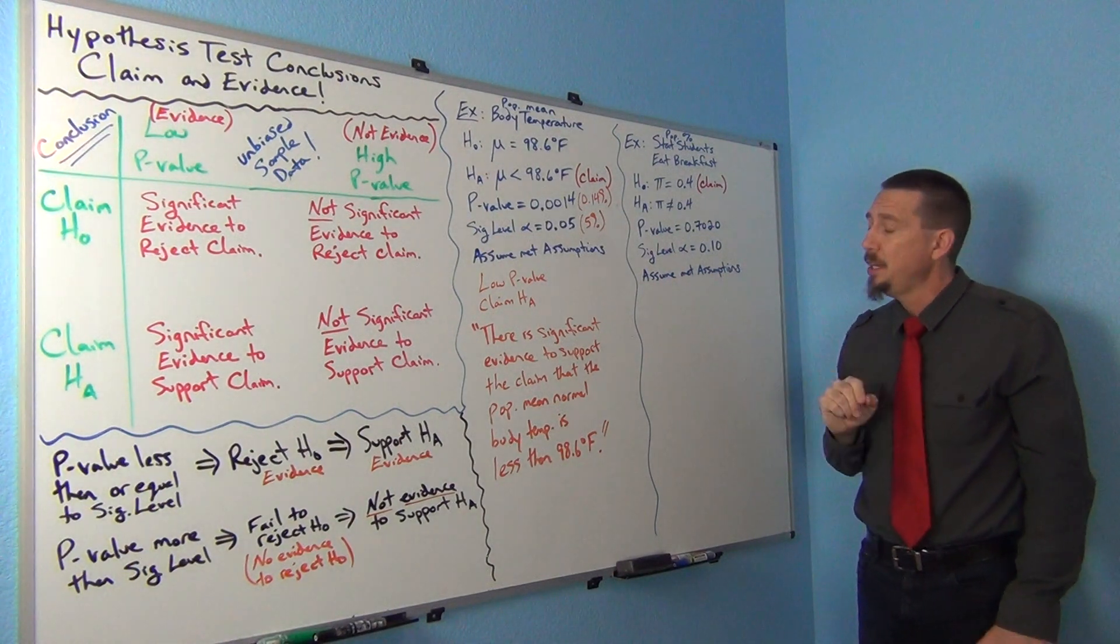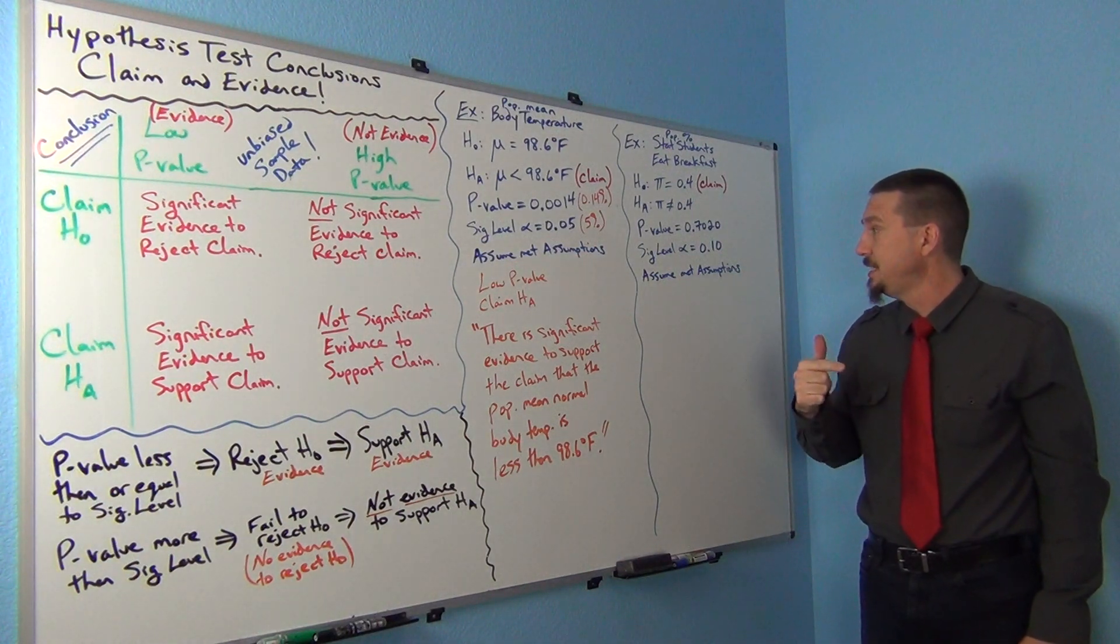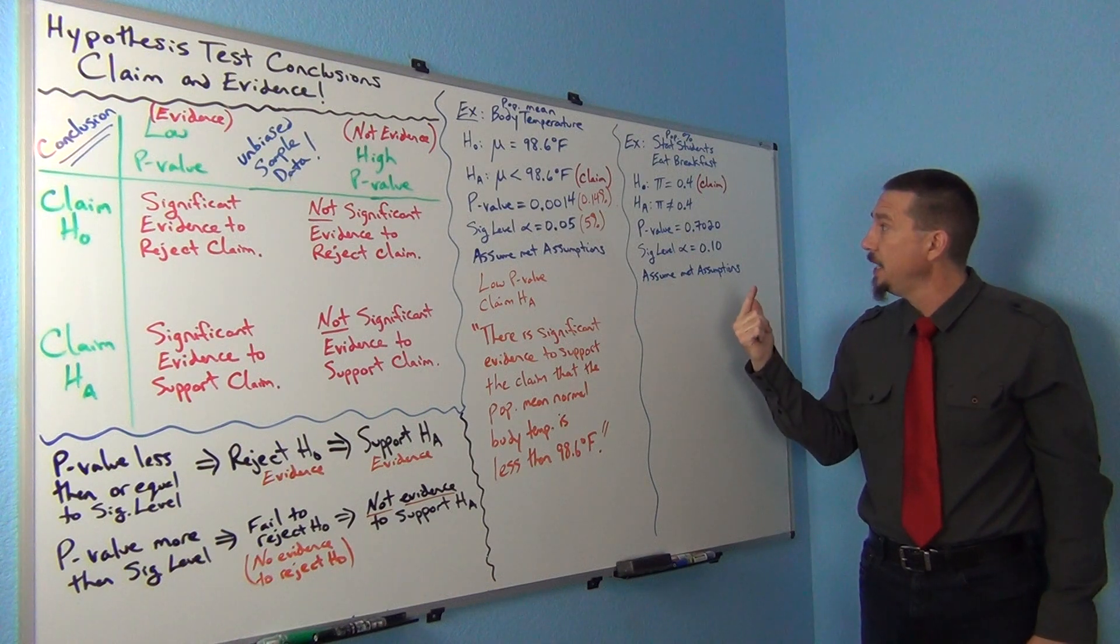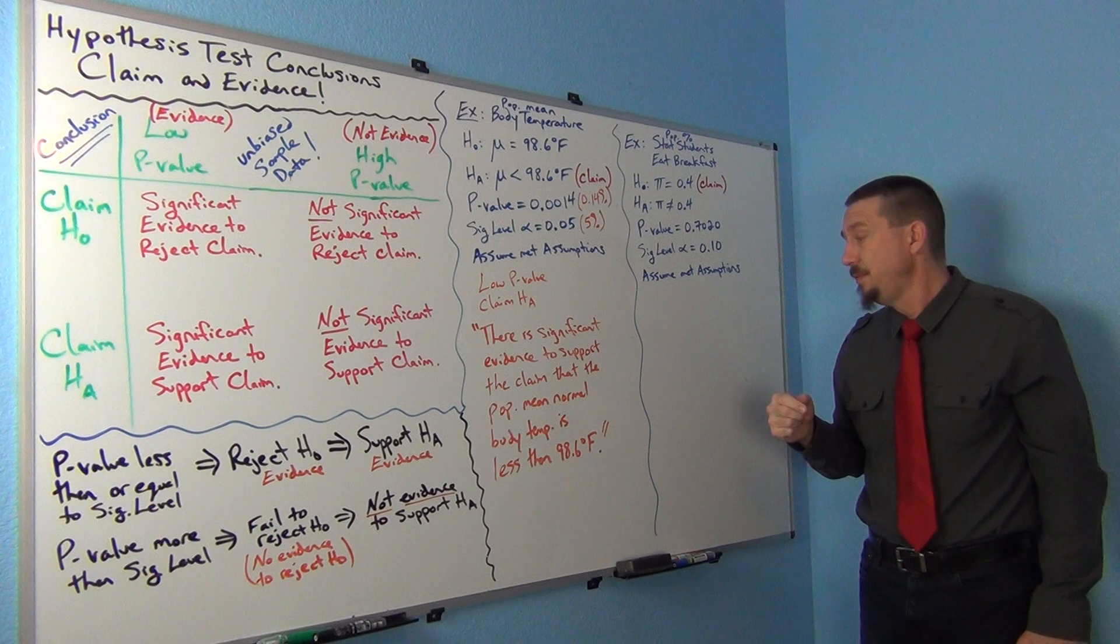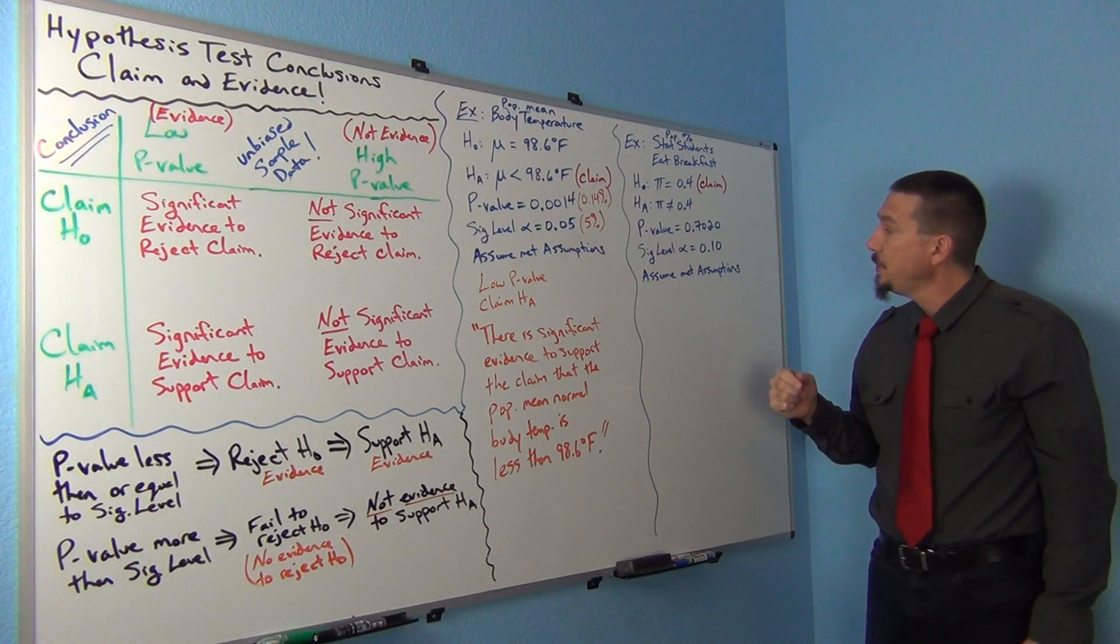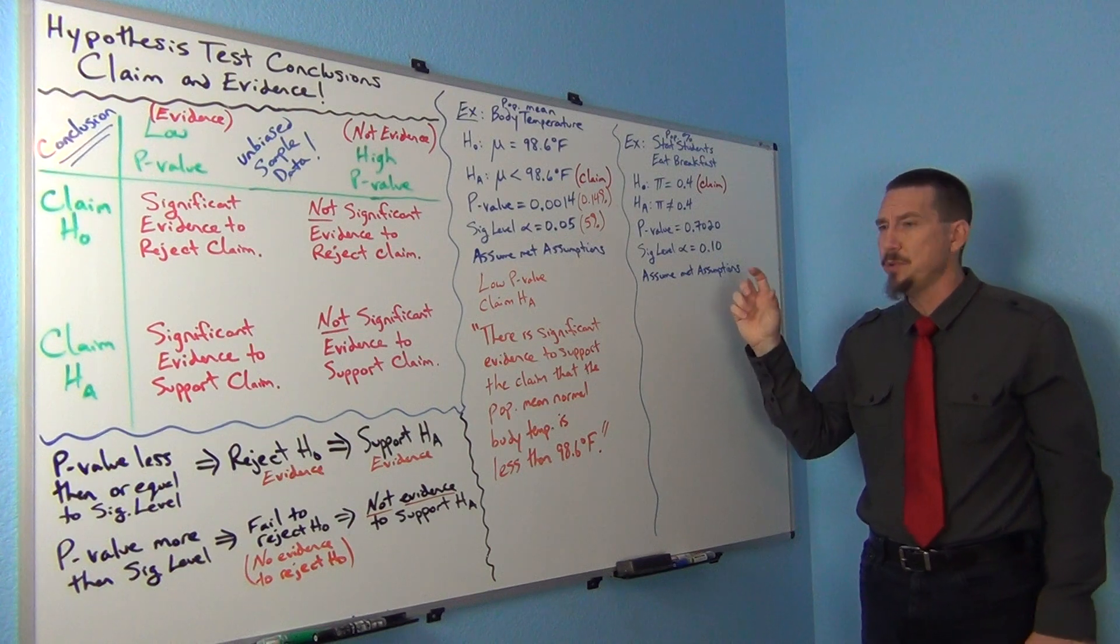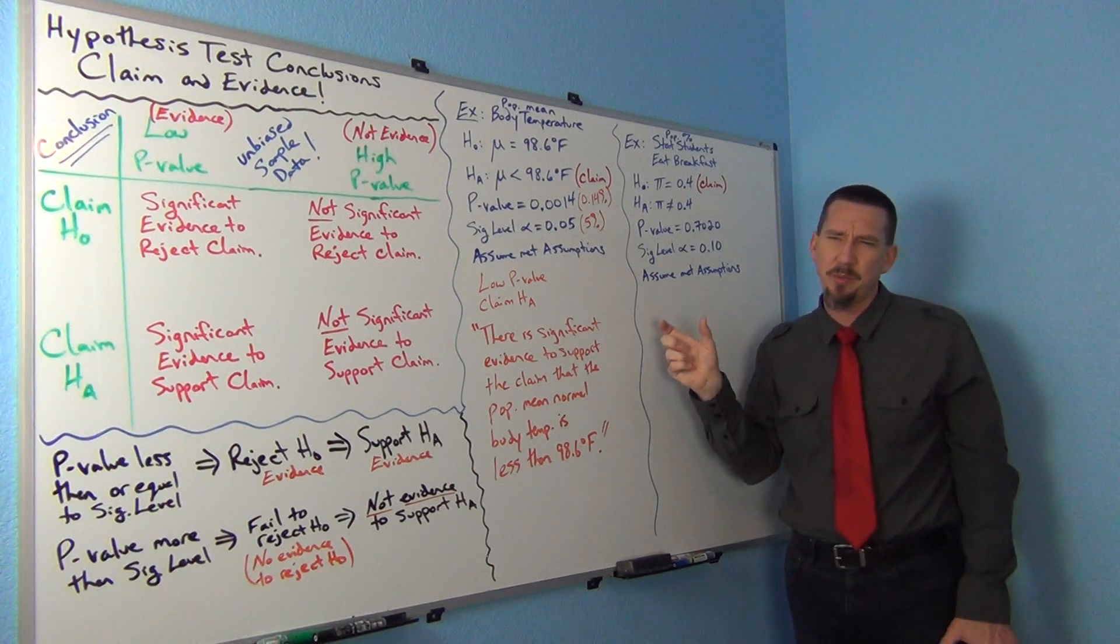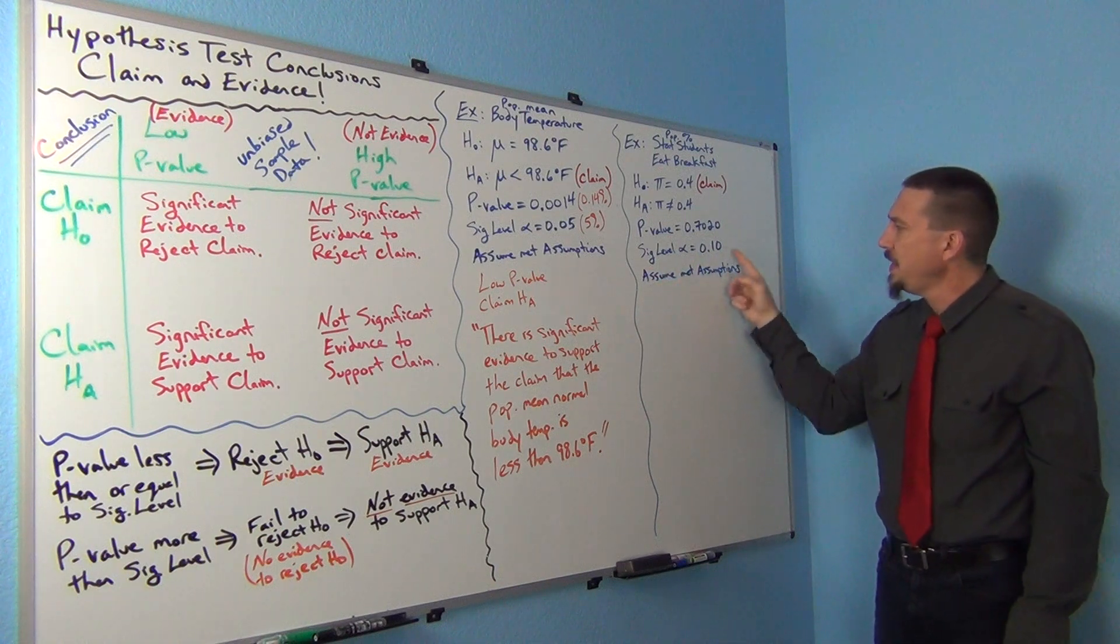So assumptions for proportion would be random, independent, and then at least 10 successes and at least 10 failures. By the way, if it wasn't a random sample, you could still get away with it if the sample data was representative of the population. And I think this did meet that assumption at least.